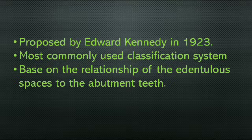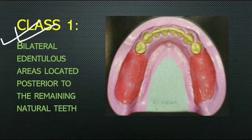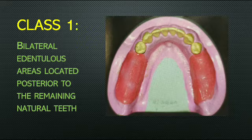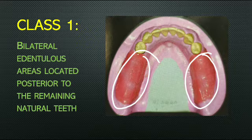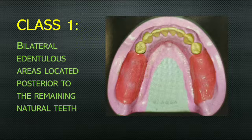Class one is bilateral edentulous areas located posterior to the remaining natural teeth. In this diagram you can see the natural teeth present in the oral cavity, and these are the abutment teeth being used on both sides of the arch. The edentulous space is not present unilaterally — it is present on both sides, making it bilateral edentulous areas located posteriorly to the remaining natural teeth.